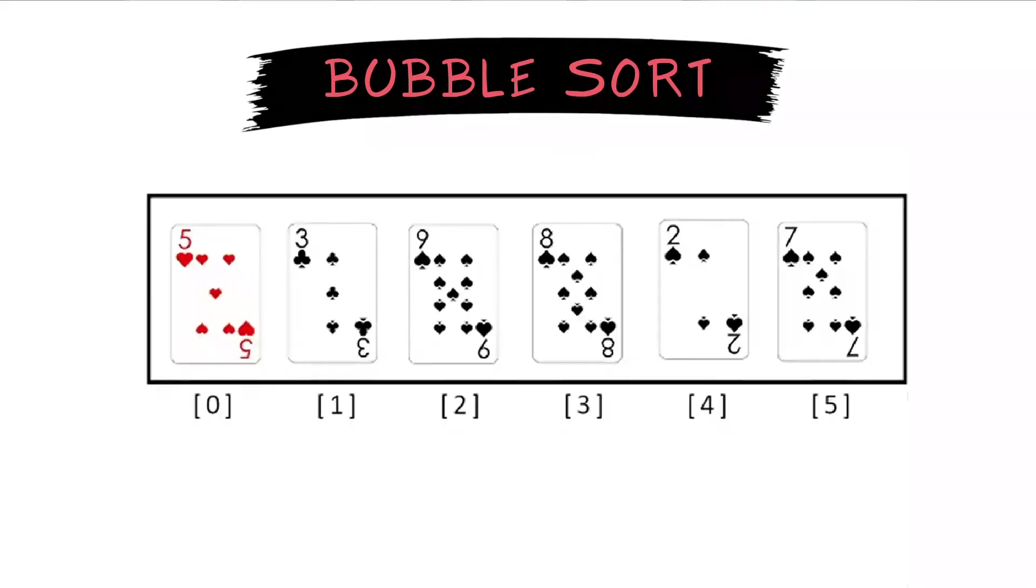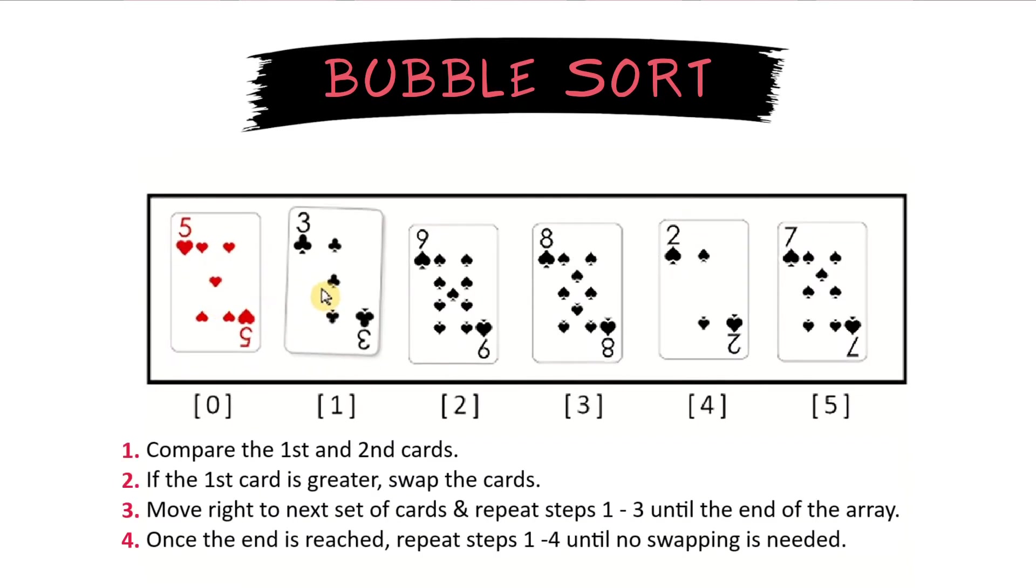To start, I randomly pick 6 cards and put them on the table. We always begin at the first 2, which is 5 and 3. Since 5 is larger than 3, we swap these 2 cards.